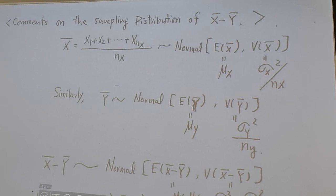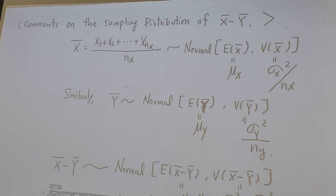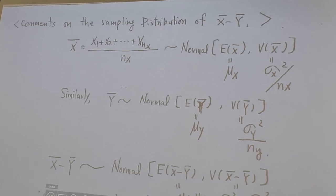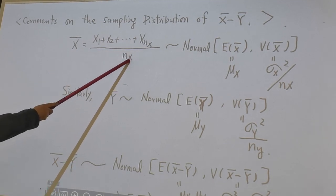And a constant times a normal random variable still normal. Let's call what? Normality is closed under linear combination. So in this case, normality is closed under linear combination.